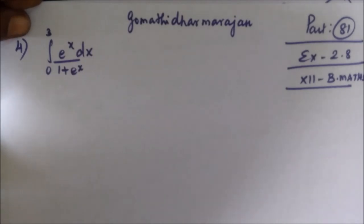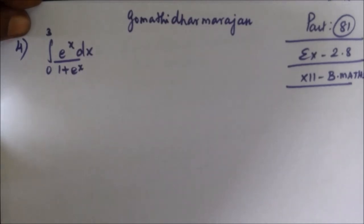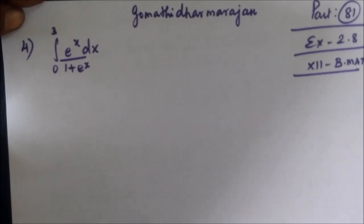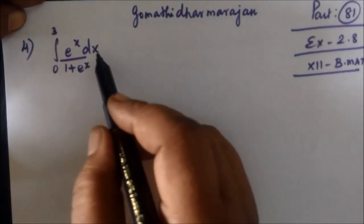Part number 81, exercise 2.8, total business method, question number 4.